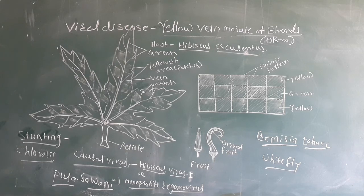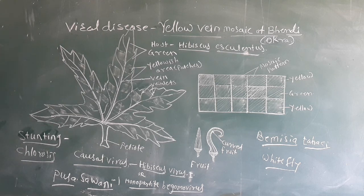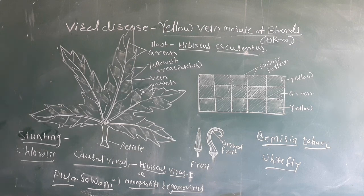Another control measure is maintaining proper plant spacing to ensure full sunlight and aeration, which helps avoid the disease. Also, avoid sowing susceptible varieties during the summer season when whitefly activity is high. When whitefly activity is more, susceptible varieties should not be grown. In this way, the disease can be controlled. This concludes the topic of Yellow Vein Mosaic of Bhendi.